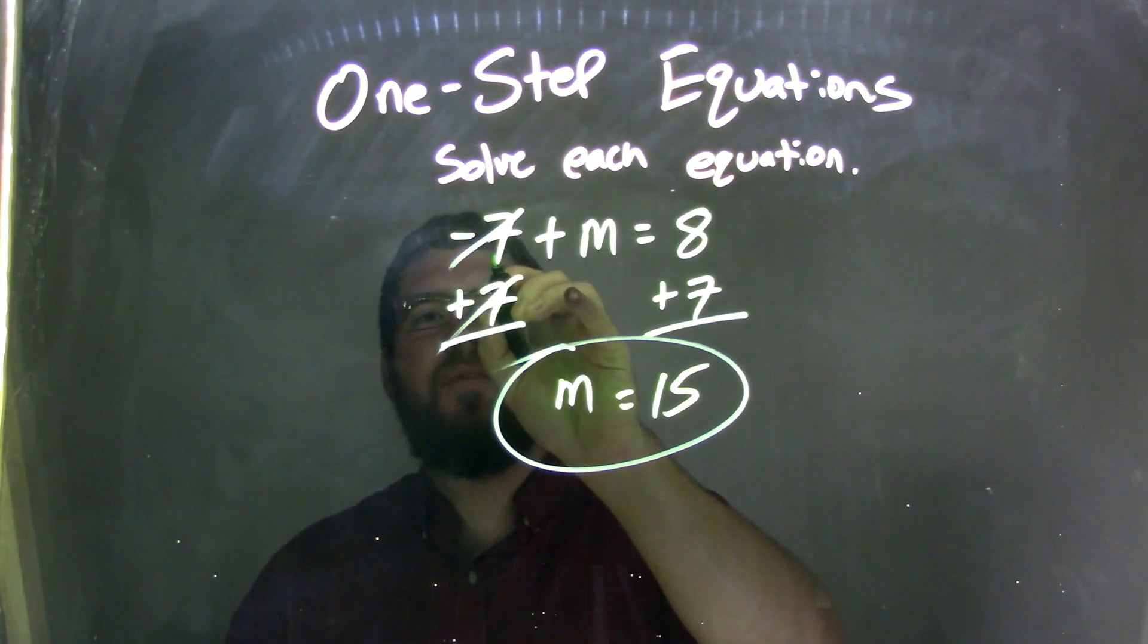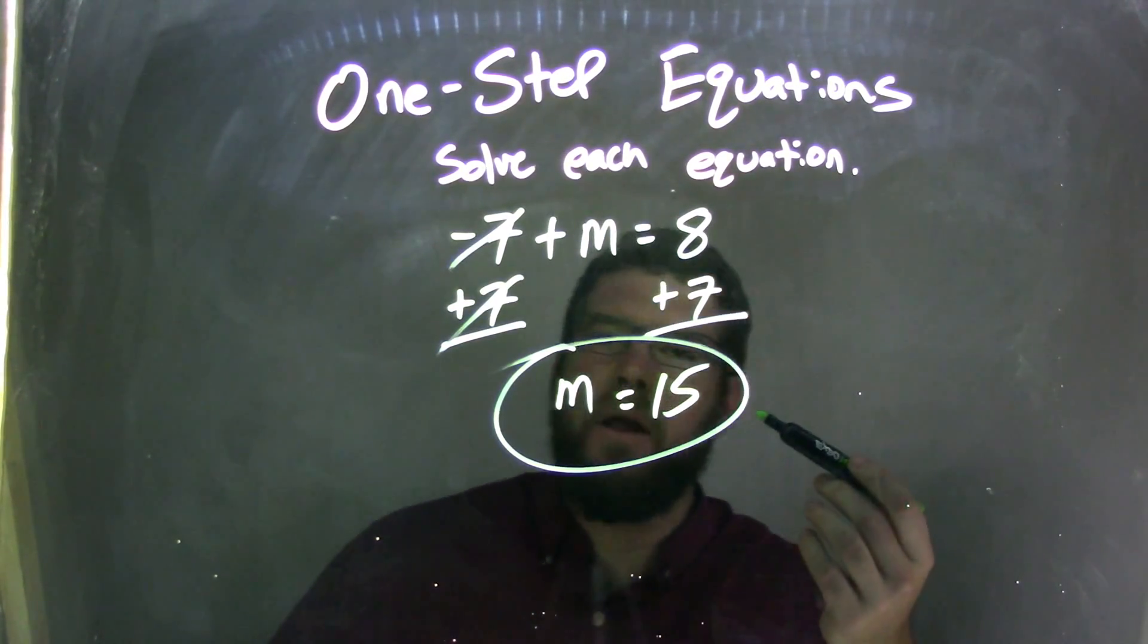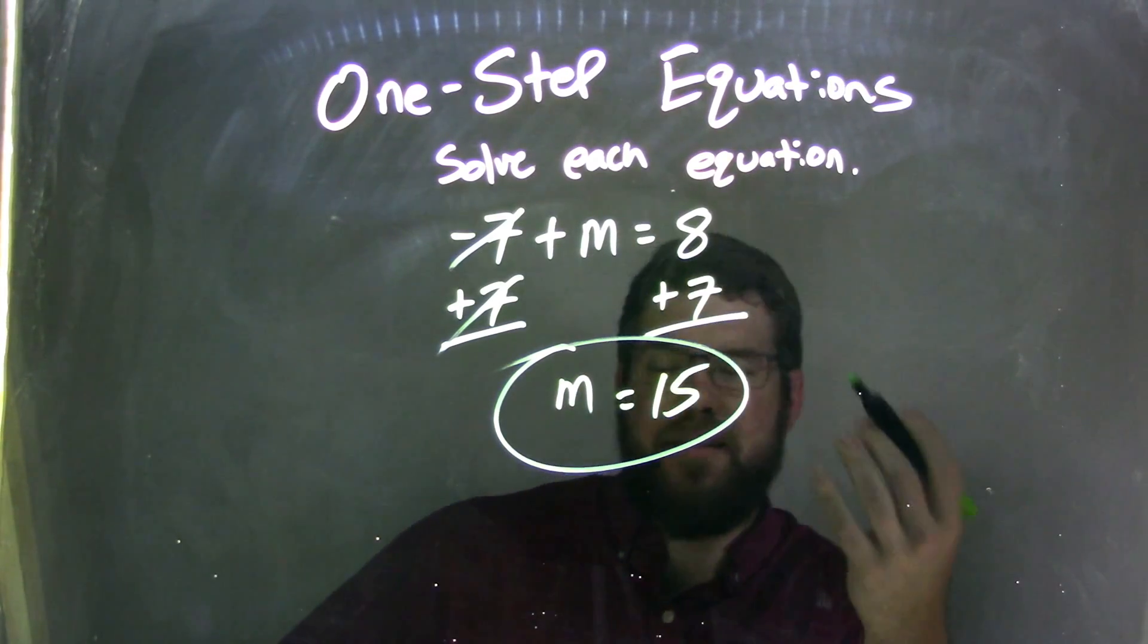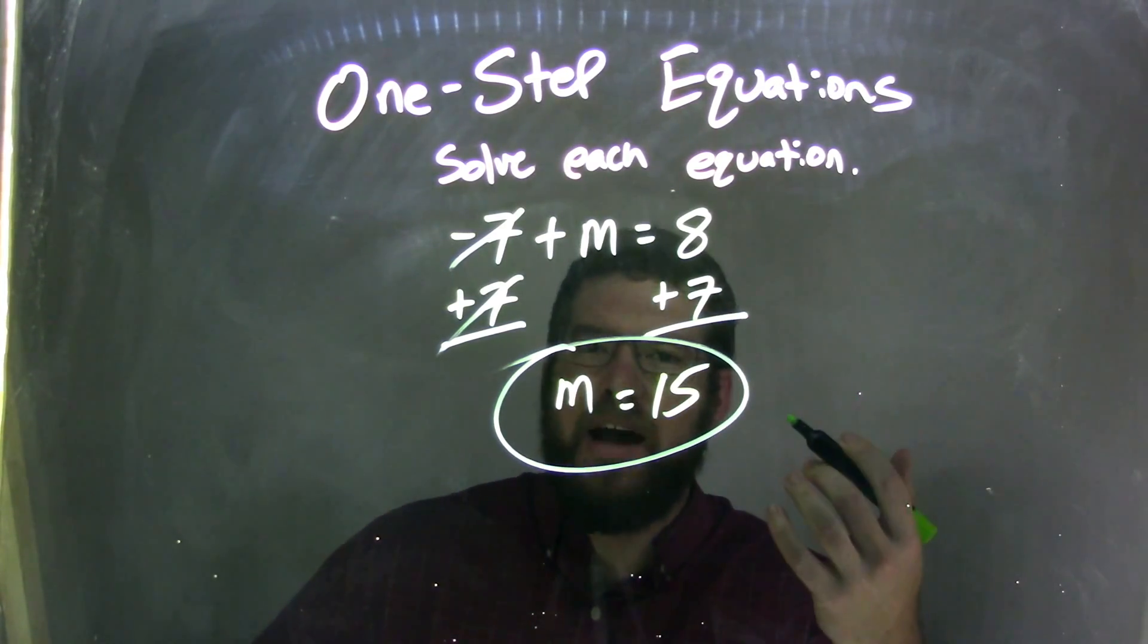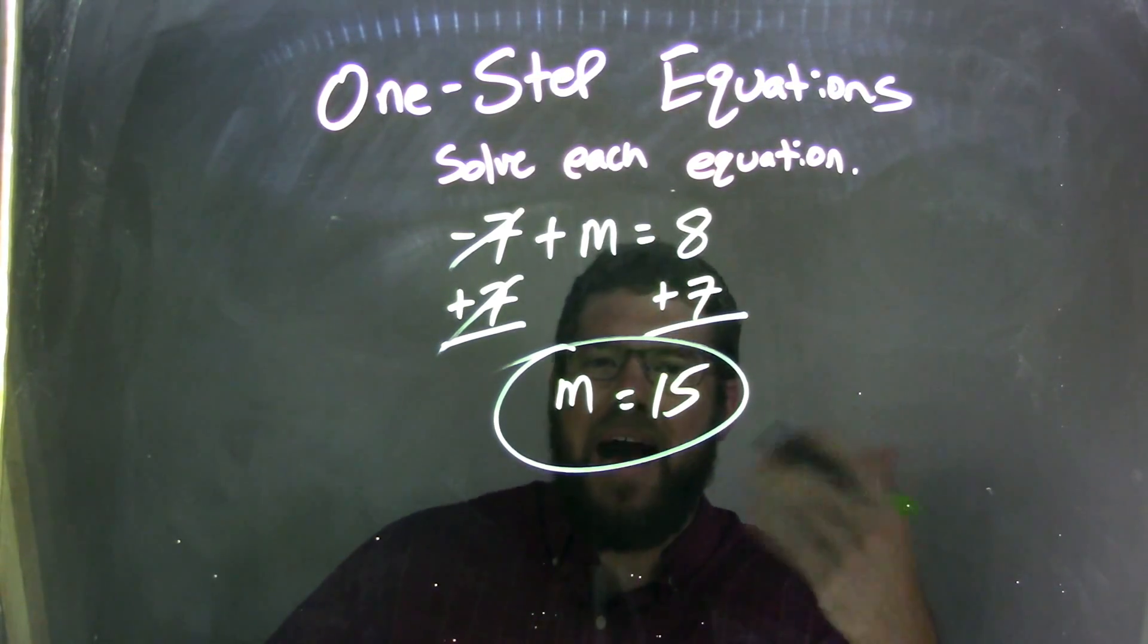So let's recap. We start with negative 7 plus m equals 8. That negative 7—or minus 7, which is like subtracting 7—I can add a 7 to do the opposite of that.